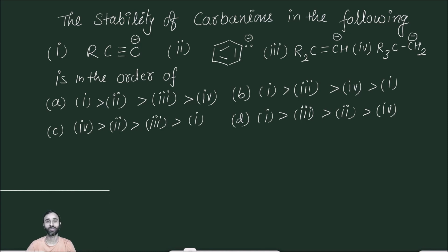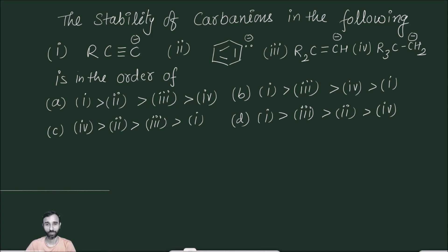So this is the question on your screen. The question is the stability of carbanions in the following. So first of all, carbanion means carbon with a negative charge. So here all of them have a negative charge on the carbon. Now, what is their stability order?